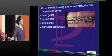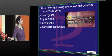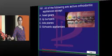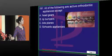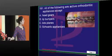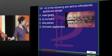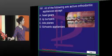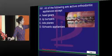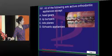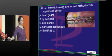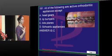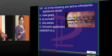All of the following are active orthodontic appliances except bite planes. The key word is 'active.' Lip bumpers are active, headgear is active, and Schwartz has a screw so it is also active. Bite planes do not exert any kind of force, so they are passive.